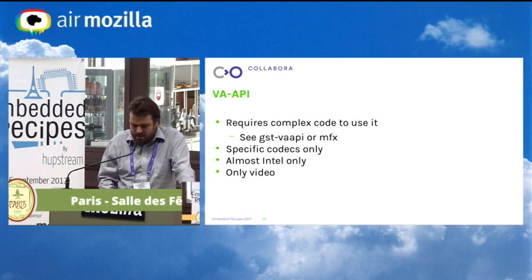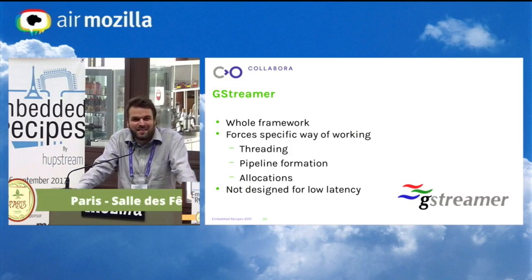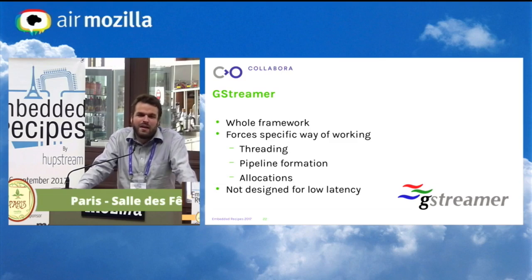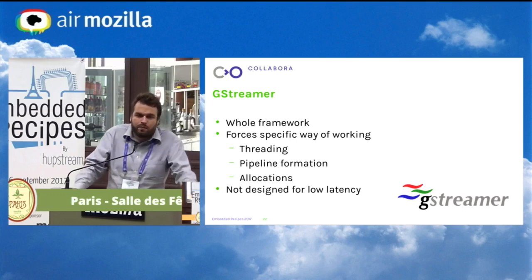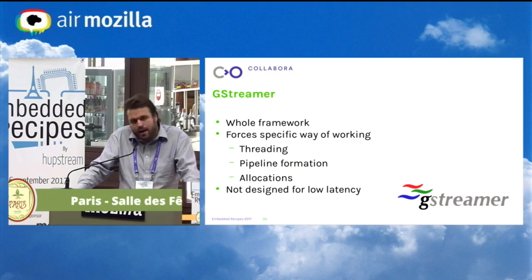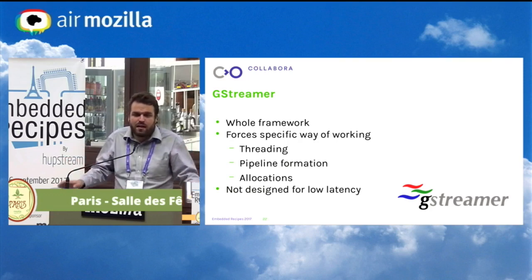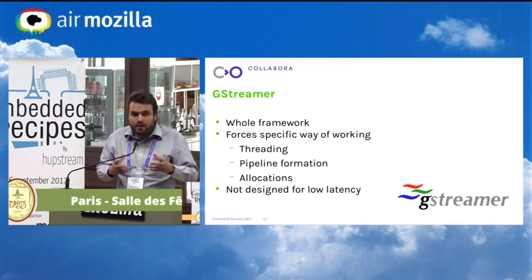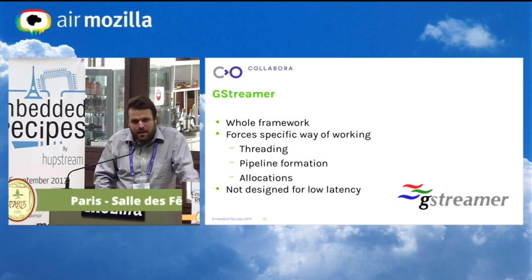I'm a GStreamer guy, so you might think I'd say GStreamer is the solution. But GStreamer is not a codec API — it's a pipeline model, a whole multimedia framework. It depends on GLib, forces a certain way of working for threading, pipeline formation, and allocation. It's totally not hard real-time capable, not capable of doing low latency, and has relatively high per-buffer overhead — so for low-latency audio it's completely out of the question. And once you have a GStreamer element, it's easy to use inside a GStreamer pipeline, but if you want to use it in a different framework you'd be in a world of pain — no better than OpenMAX there, except that it is at least an active project.